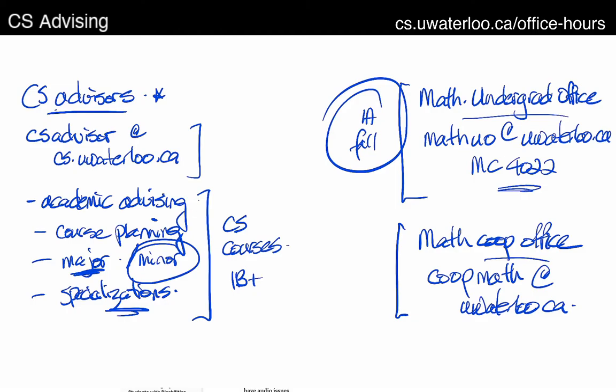Those are the three groups you're going to work with. If you're a CS major student or you're taking a CS minor and want to talk about academics related to those, the CS advisors are the people you should go to for those activities.